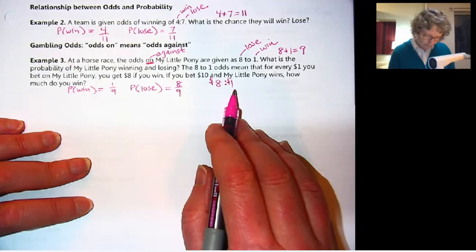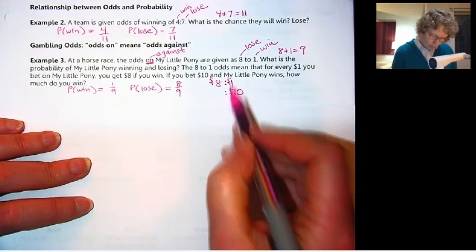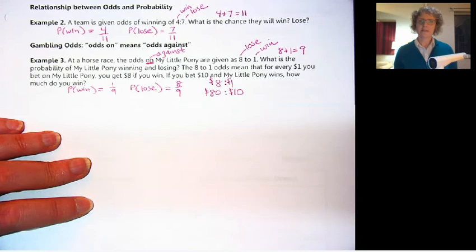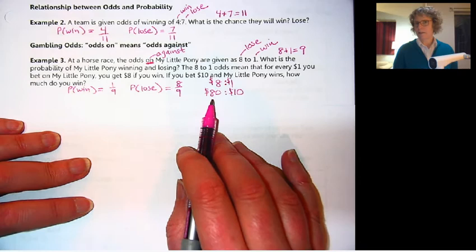Of course if you lose, you lose your money. So if we bet $10, we're multiplying that by 10, we have to keep the same ratio. That would be a ratio of 80 to 10. So if you put $10 down, you stand to gain 80 bucks.